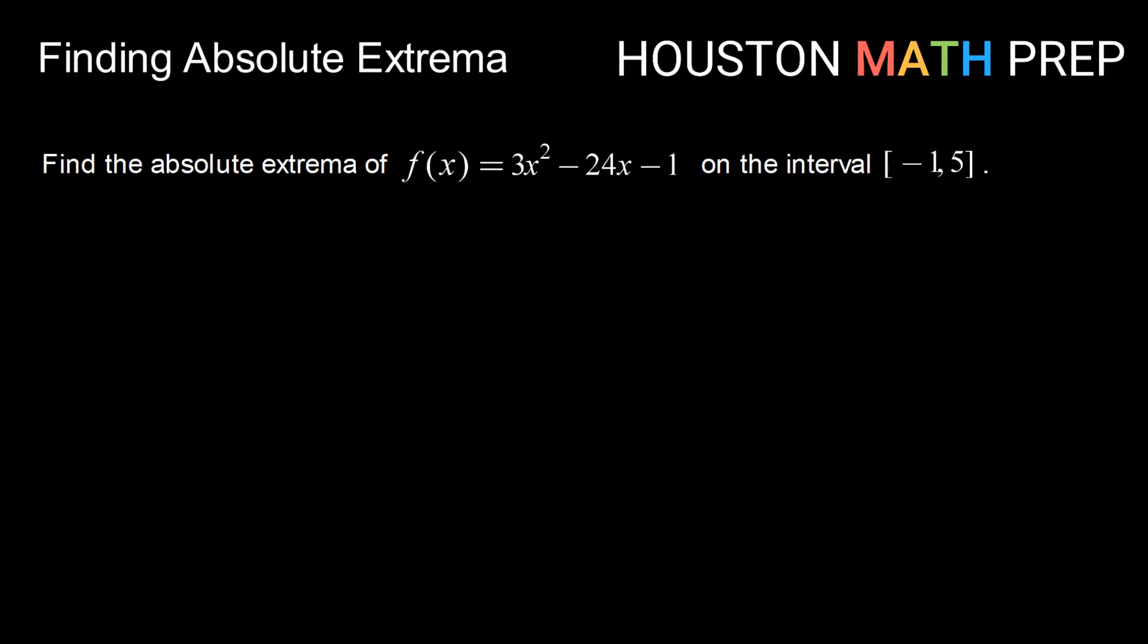So let's take a look at doing just that. If we want to find the absolute extrema for the function f(x) = 3x² - 24x - 1 on the closed interval [-1, 5],